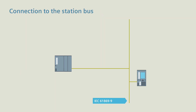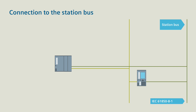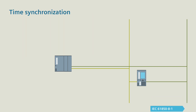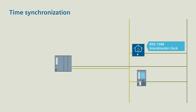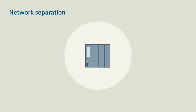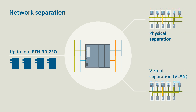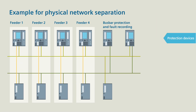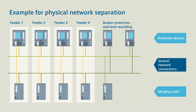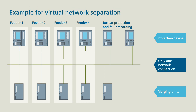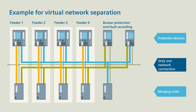With a further communication module, you can additionally connect the merging unit to the substation automation system. The time synchronization of the entire system occurs with an IEEE 1588 grand master clock. You can install up to four ETH-BD-2FO communication modules in one C-Protek 6MU85 merging unit. This enables up to four independent networks and allows you to separate these networks physically and virtually to diversify the network load. A network separation with several physical connections reduces the network engineering, while a network with only one physical connection and a virtual separation via VLAN reduces the network costs.